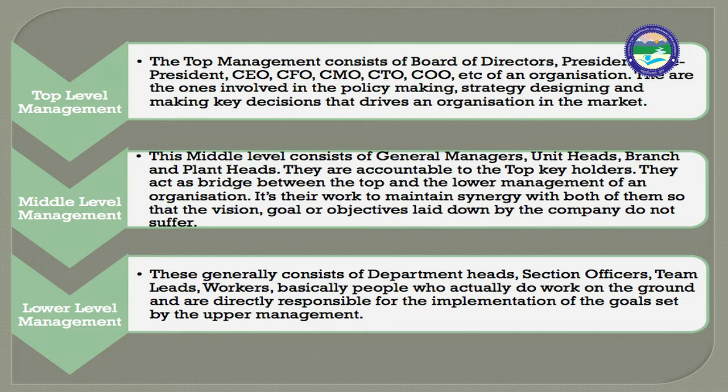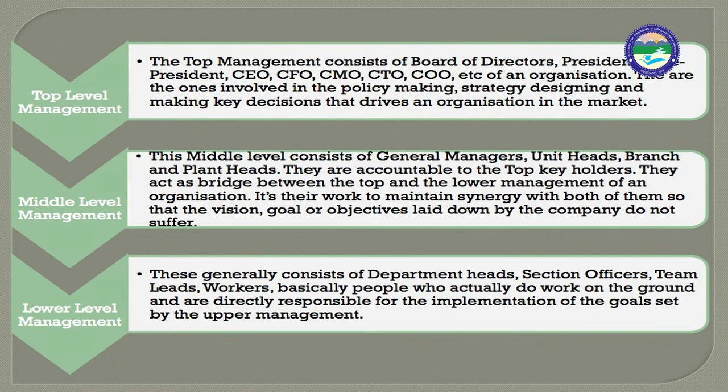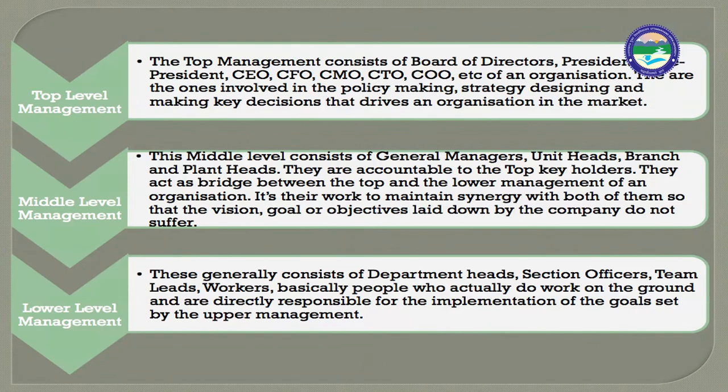They are the ones involved in policy making, strategy designing, and making key decisions that drive an organization in the market. The middle level consists of general managers, unit heads, branch and plant heads. They are accountable to the top key holders and act as a bridge between the top and lower management. It is their work to maintain synergy with both so that the vision, goals, and objectives laid down by the company do not suffer.